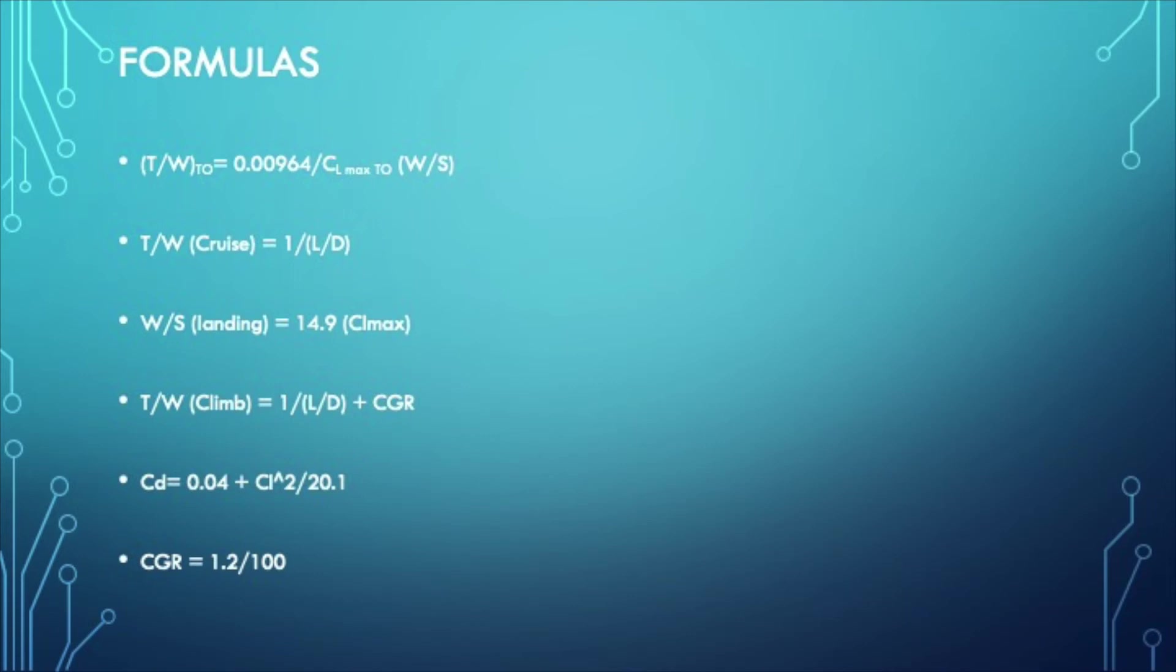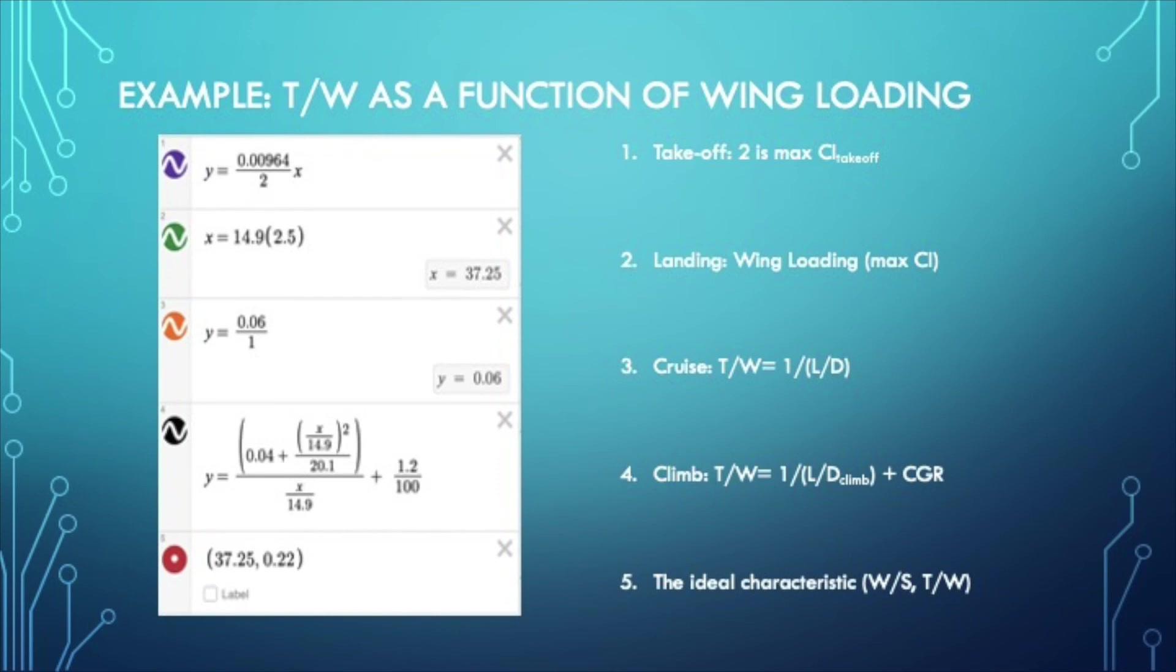Another equation that I'm going to need is CD as a function of CL. Okay, so now I'm going to put the equations next to what I'm going to plot on Desmos. As you can see, the first equation is for takeoff. Y is thrust-to-weight ratio and X is wing loading. Second equation is concerning landing. Third one is cruise and fourth one is for climb. The fifth one is a point that I'm going to show you where our optimum design characteristic is going to be.